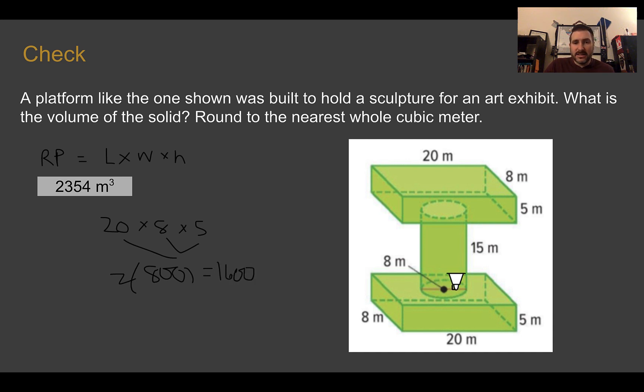For our cylinder, the radius is 4, so we end up with 4 squared times π times our height of our cylinder is 15, so 4 squared is 16, 16 times 15 is 240. And then multiplying that by π, we end up with 753.6, which I'm just going to round to the nearest whole right now, so 754. Adding those two things together, we end up with our final 2,354.